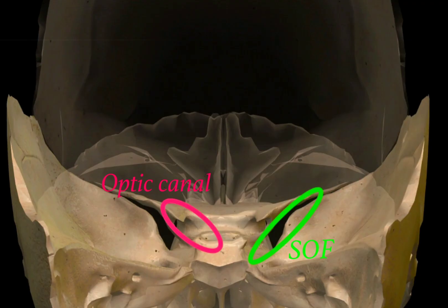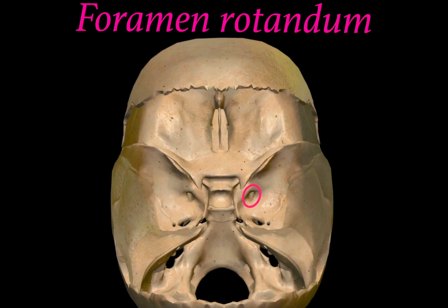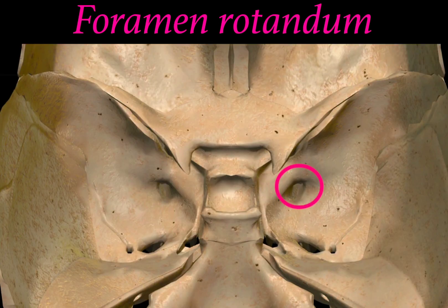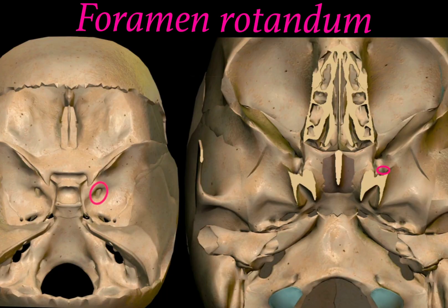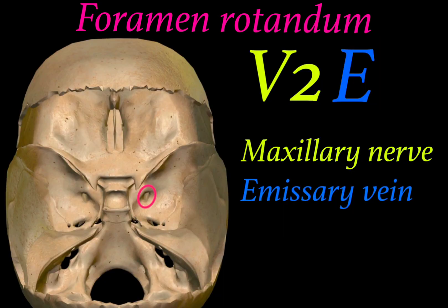This figure shows both the optic canal and the superior orbital fissure. The third foramina is the foramen rotundum, which lies just below the superior orbital fissure. The structures passing through foramen rotundum are the second division of the trigeminal ganglion — the maxillary nerve (5th cranial nerve) — and E stands for emissary vein.